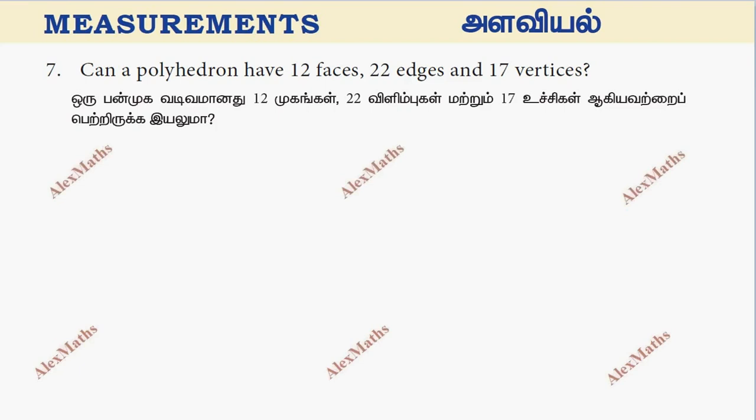Hi students, this is Alex here. Can a polyhedron have 12 faces, 22 edges, and 17 vertices? In this case, F value is 12, so F equals 12. Edges E value is 22, and vertices V value is 17.